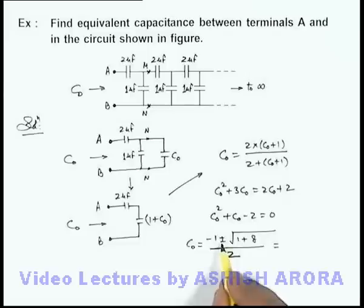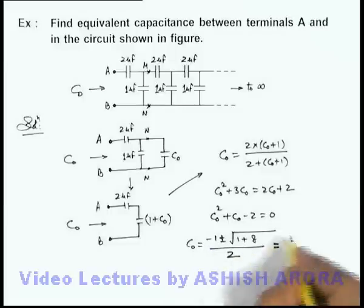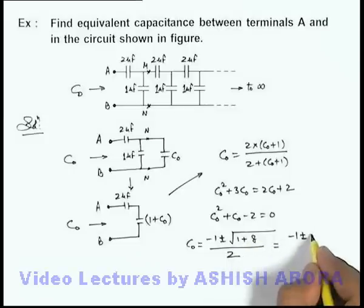You can ignore this negative sign here because we can directly say capacitance can never be negative. So final result we are getting is minus 1 plus minus square root of 9 we can take as 3, divided by 2.